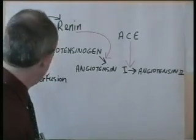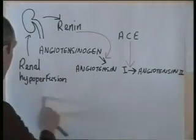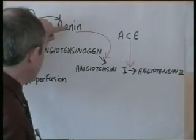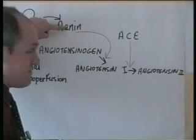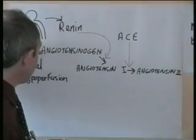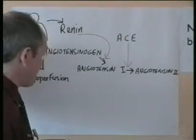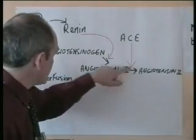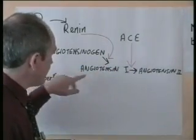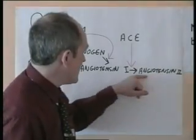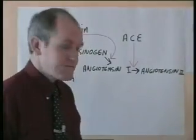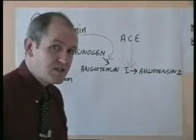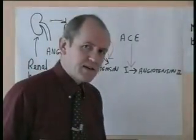Let's review what's happened. The kidney is hypoperfused — that's detected. The kidney responds by producing renin. Renin facilitates the conversion of inactive angiotensinogen, a plasma protein, into angiotensin type 1. Angiotensin type 1 is mildly active, but angiotensin type 2 is much more active. Angiotensin type 2 is actually a smaller peptide unit that contains 8 amino acids.